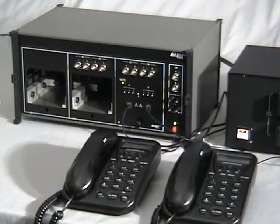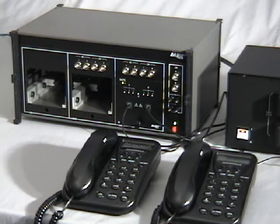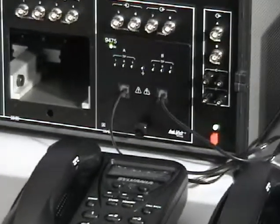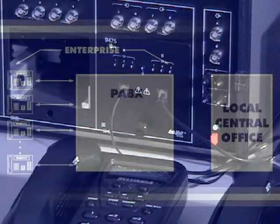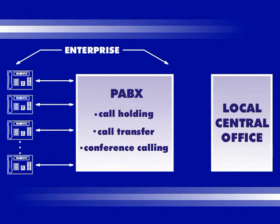As mentioned earlier, the reconfigurable training module of the Telephony Training System can also act as a private automatic branch exchange, similar to those used in many enterprises. A private automatic branch exchange, or PABX, is a system that provides basic telephone service within an enterprise, along with additional functions such as call holding, call transfer, and conference calling, and a link with the local central office of the public telephone network.